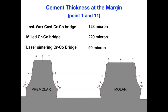The cement thickness at the margin — the marginal gap between the restoration and the tooth structure — measured at points 0.1 and 11, was 120 microns in the lost wax casting group, 220 microns in the milled group, and 90 microns in the laser sintering group.